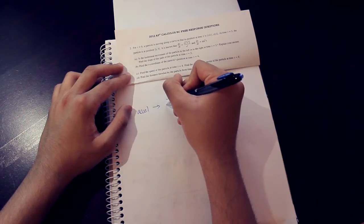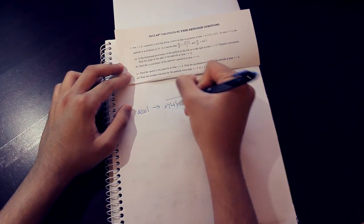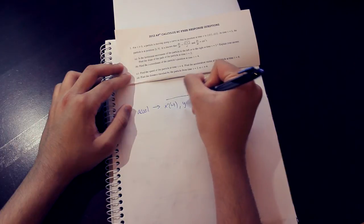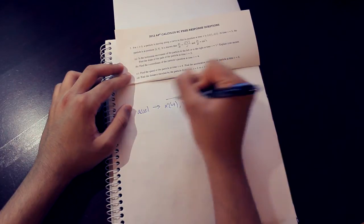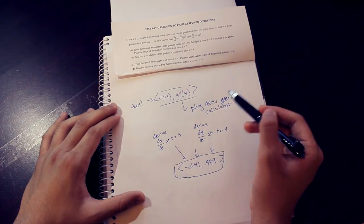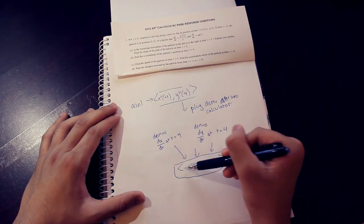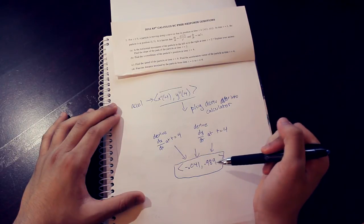Now when it asks us for the acceleration vector, we don't really have to do anything complicated. Acceleration is the derivative of speed, so just derive both given equations, and you'll get the acceleration in both directions. So just derive both the given equations at t equals 4 using your calculator, and you should get a very easy, simple, quick answer: .041, .989.